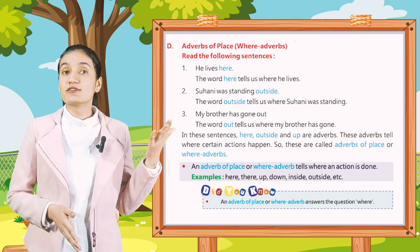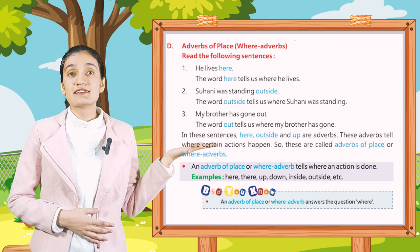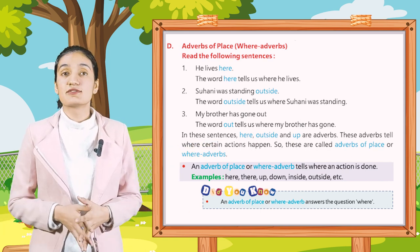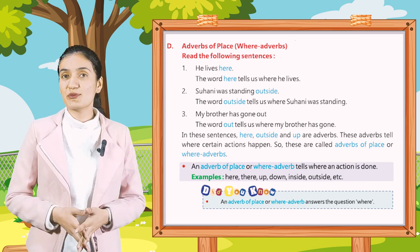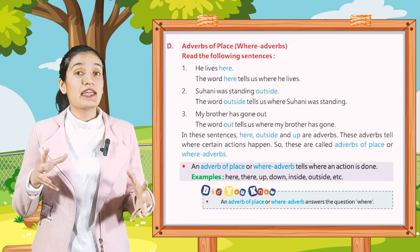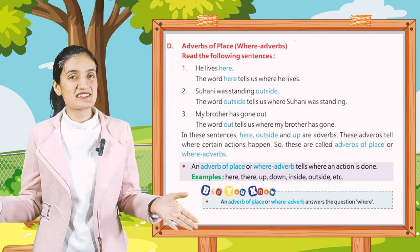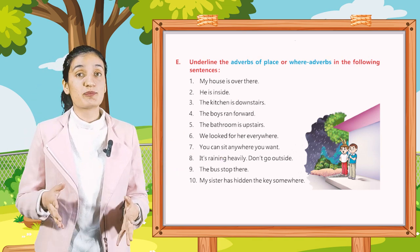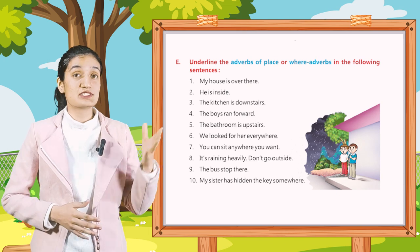These adverbs tell where certain actions happen, so they are called adverbs of place or where adverbs. Adverbs of place tell where an action is done. Examples: here, there, up, down, inside, outside, etc. An adverb of place answers the question: where? Part E: Underline the adverbs of place or where adverbs in the following sentences.